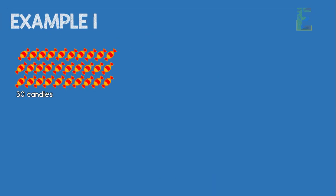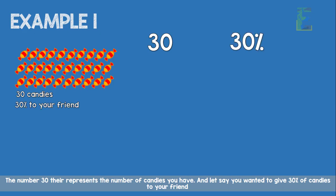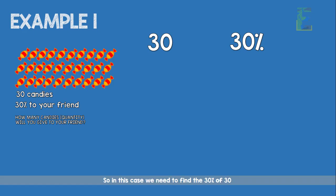For example, you have 30 candies. The number 30 represents the number of candies you have. And let's say you wanted to give 30% of your candies to your friend. So how many candies will you give? In this case, we need to find 30% of 30.